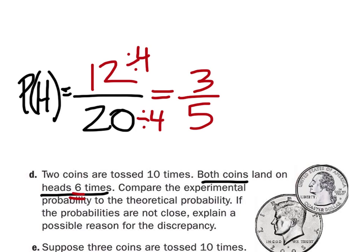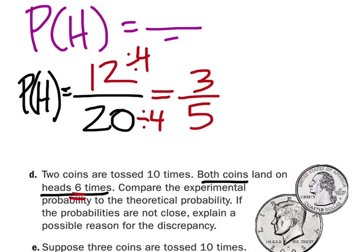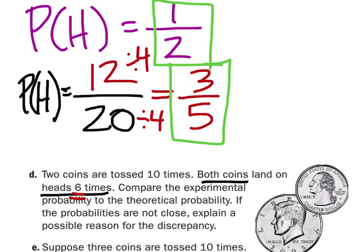Looking at the theoretical probability of heads, there are two different sides and one head per coin. Some of you may think two out of four, which is the same thing. So we compare one-half (theoretical) and three-fifths (experimental). One-half is less than three-fifths — it's about ten percent bigger, which isn't too bad of a discrepancy depending on how you look at it.